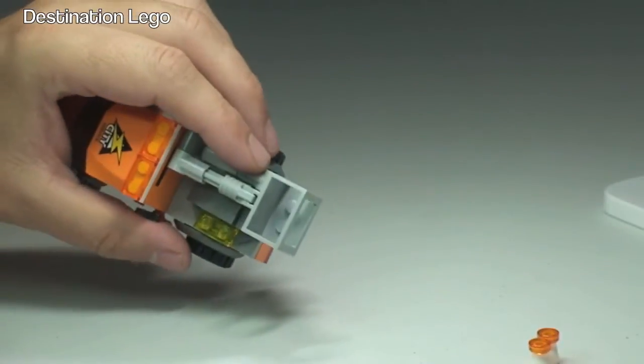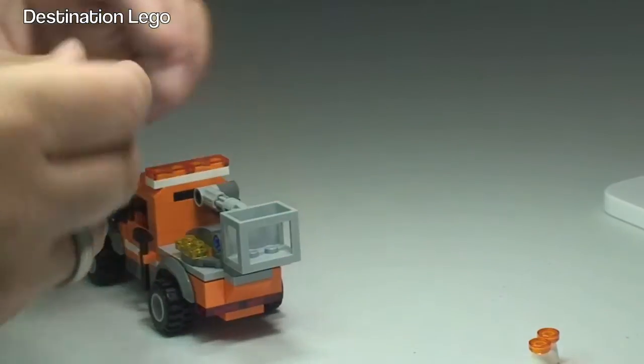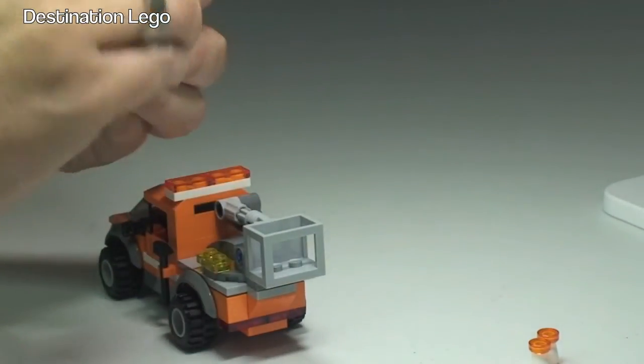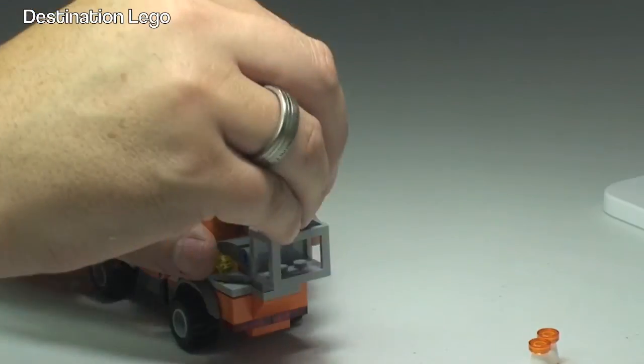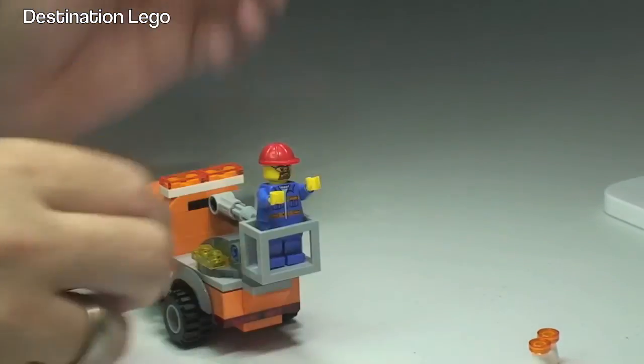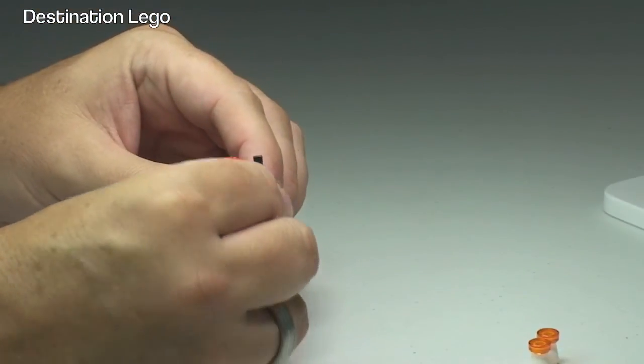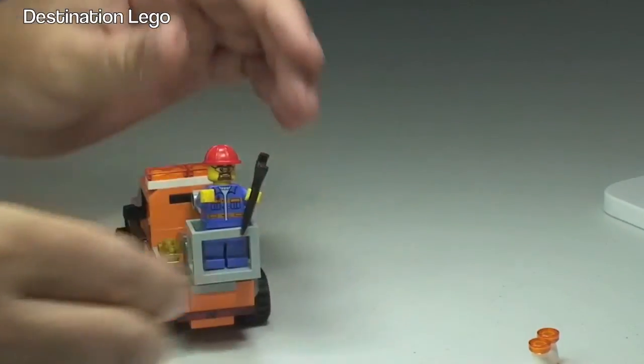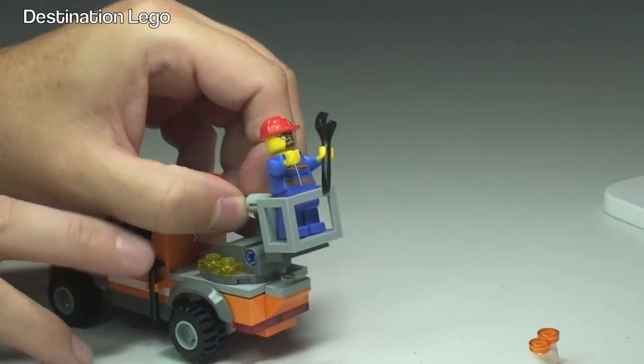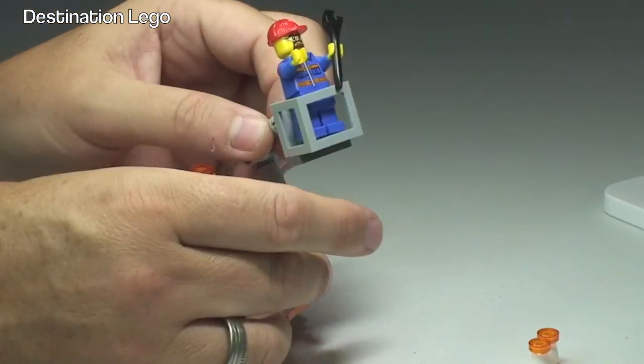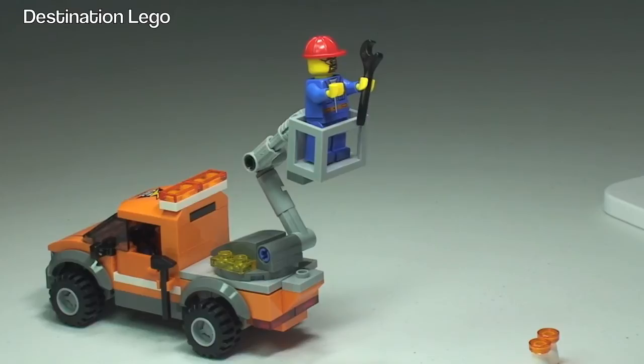Space in there for our minifigure, there are two little studs down there, so we can simply place our minifigure in the basket, like that, give him a tool. He is going to need to use something to get that lamp out, so now that he is there, we can lift him up and get him up to that lamp.